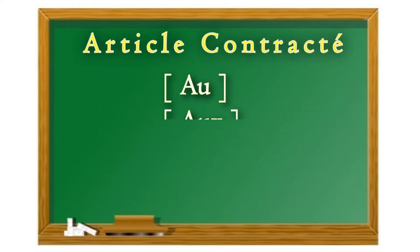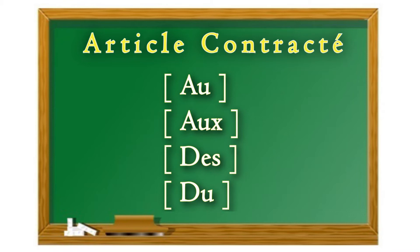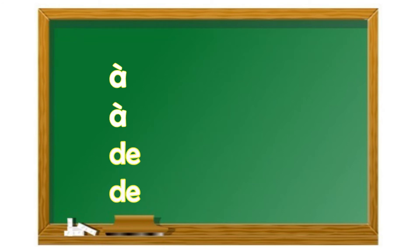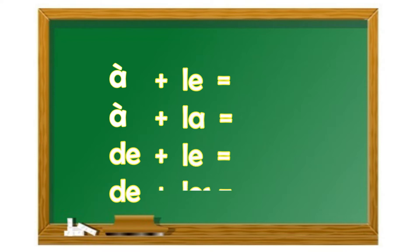Parlons maintenant de l'article contracté. L'article contracté est formé à partir de la préposition « à » ou « de » et d'un article défini « le », « la » ou « les » au pluriel.